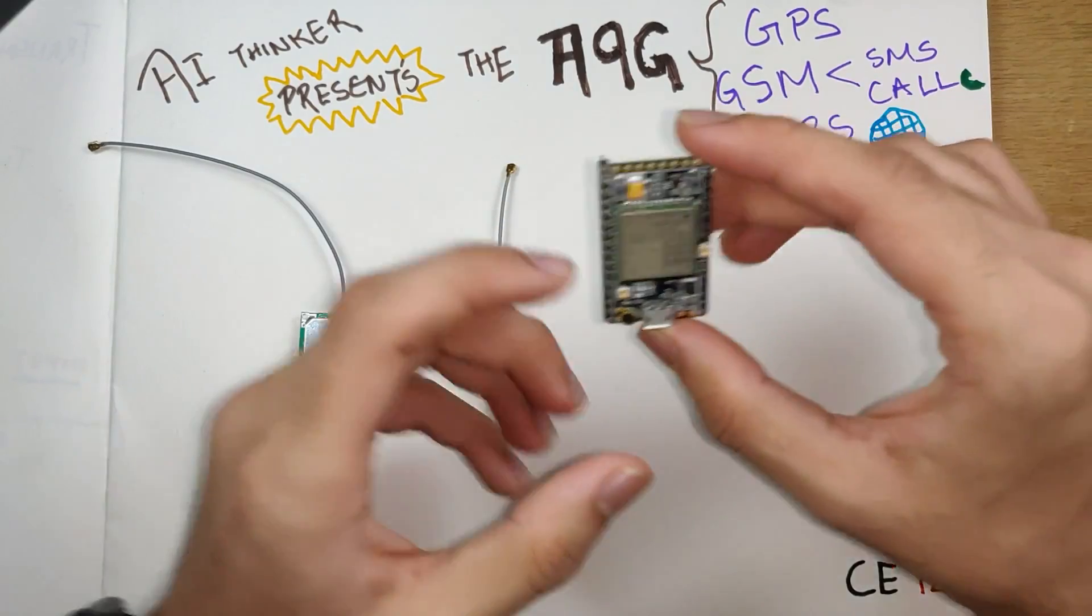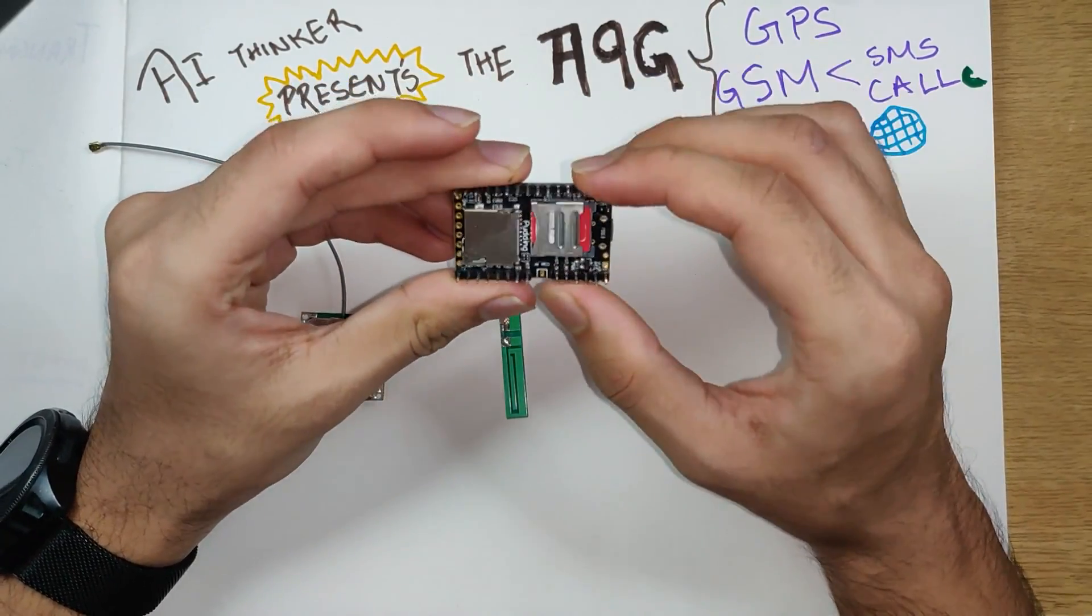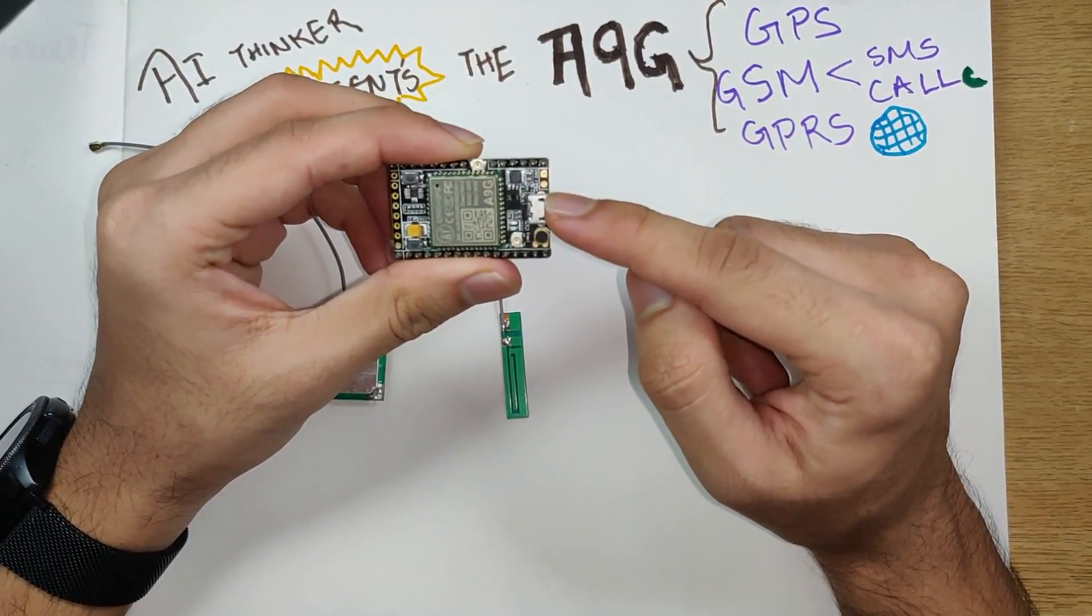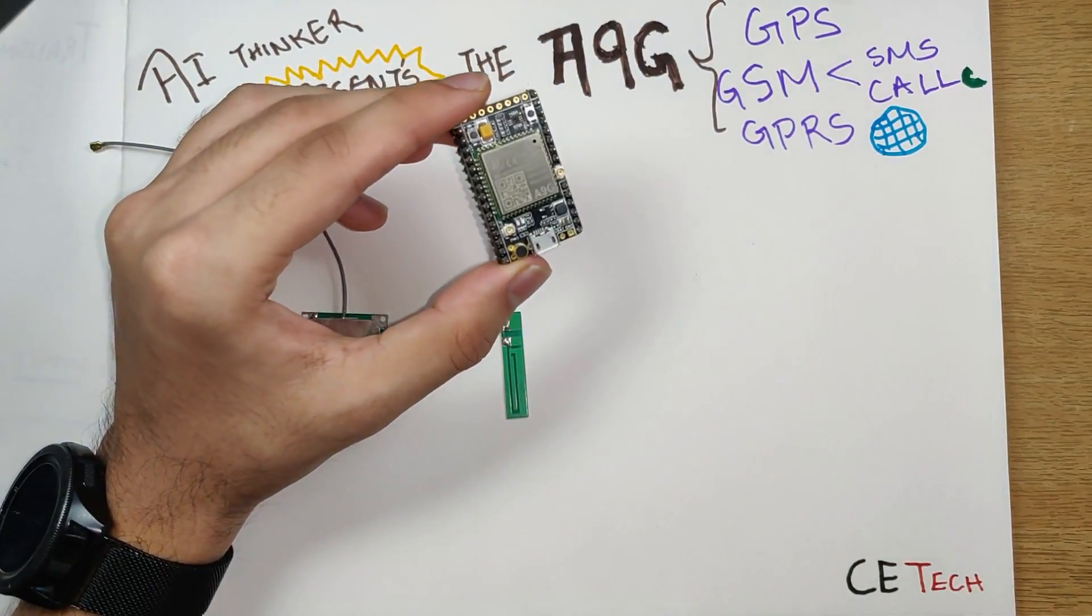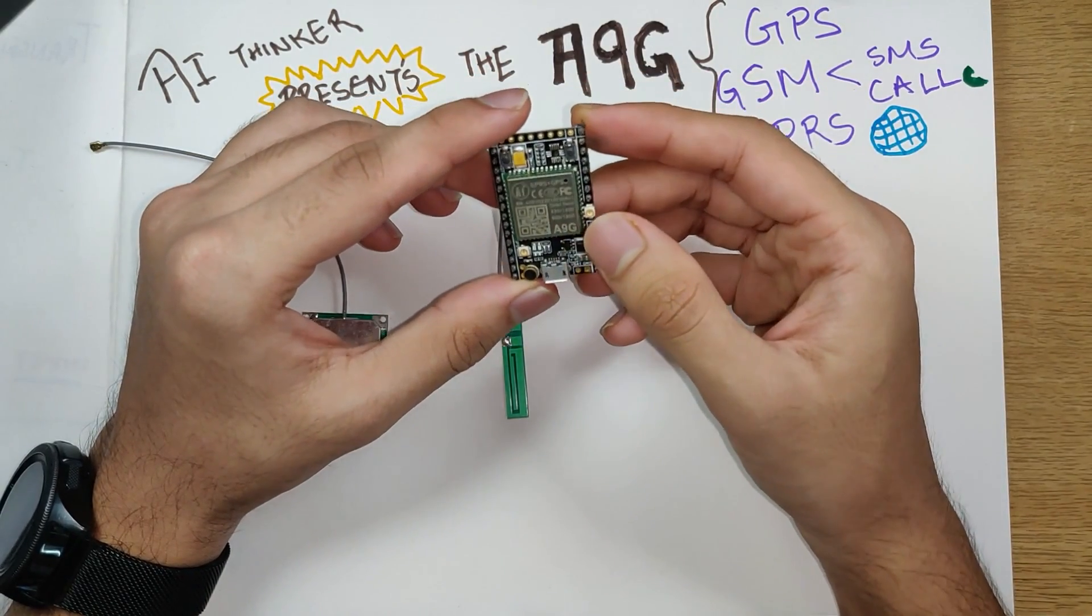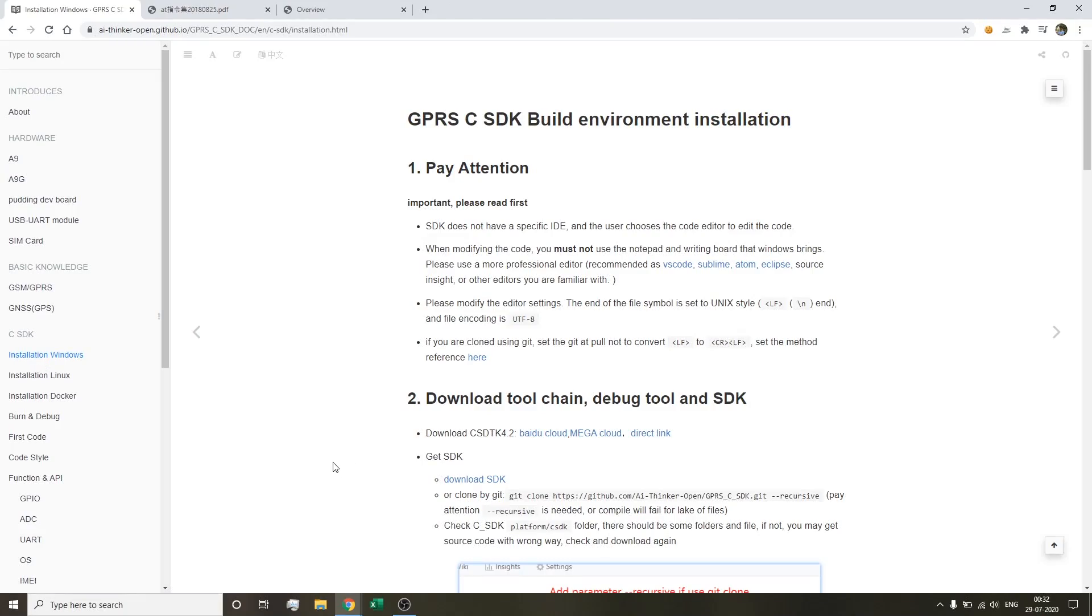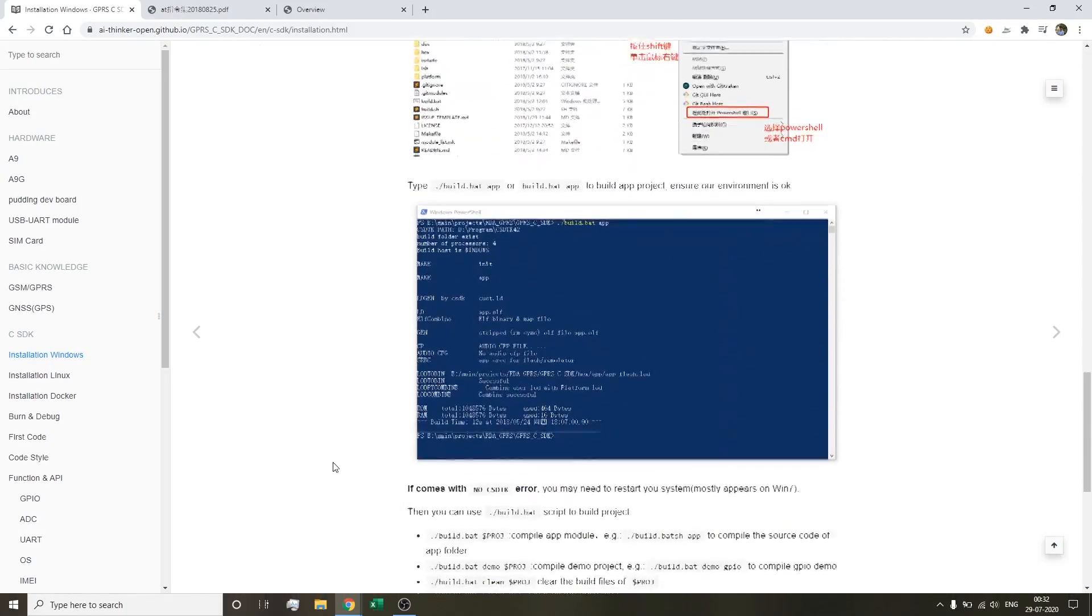Let's first closely take a look at the hardware that we have in our hands and what essentially we can do with this. Firstly, there's this USB port that's available over here. The A9G, just like any other microcontroller, is programmable. You need to lay your hands on an SDK.